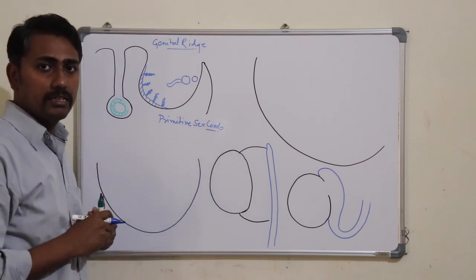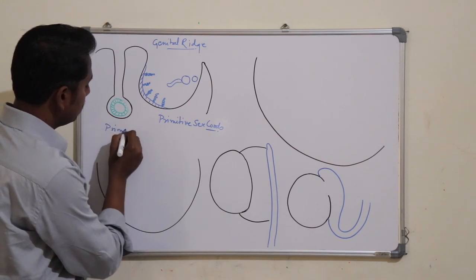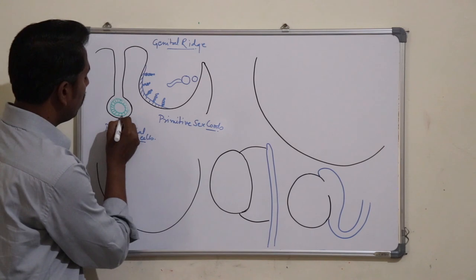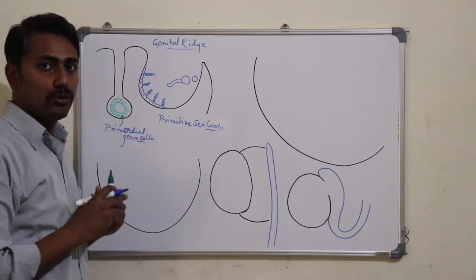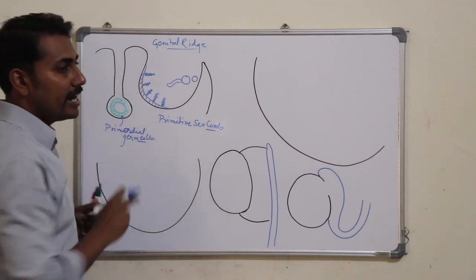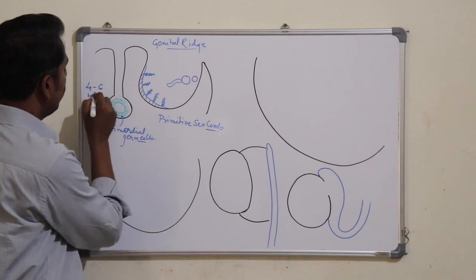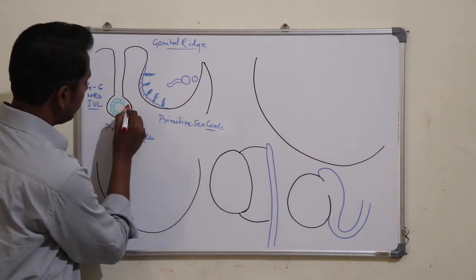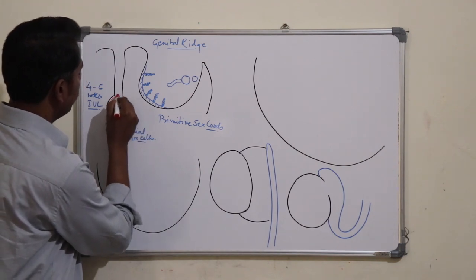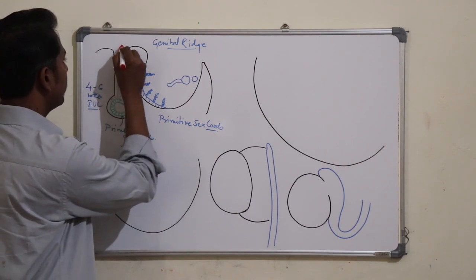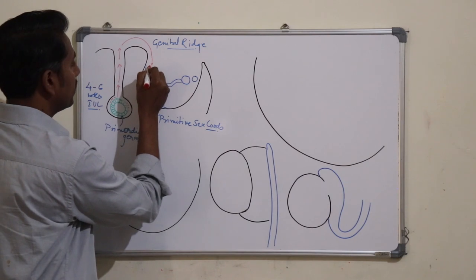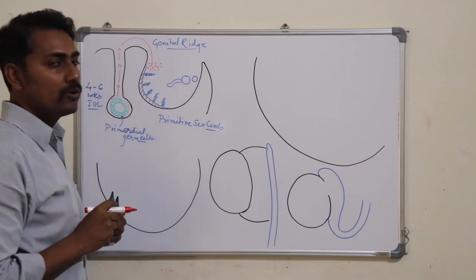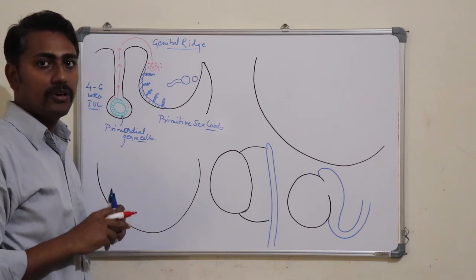The primordial germ cells, which are present in the wall of the hindgut and have initially developed from the yolk sac, migrate into this genital ridge at about 4 to 6 weeks of intrauterine life. These primordial germ cells migrate through the dorsal mesentery of the hindgut and enter into the genital region, where they will further give rise to spermatogonia or oocytes, depending on whether it is male or female.